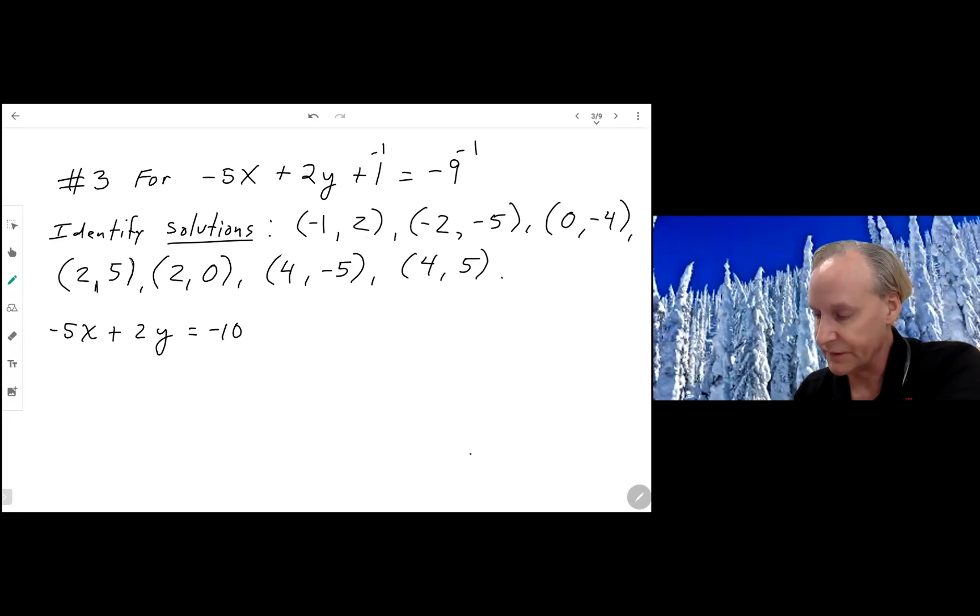So I'm going to substitute in my negative 1, 2 and see if it's true. Negative five times X plus two Y. And you know what, I think I am going to subtract the 1 from both sides so that it is in standard form. And I'm going to substitute in my first value, which is negative 5 times negative 1 plus 2 times 2. And is that equal to negative 10? Is 5 plus 4 equal to negative 10? And of course it's not. We can see immediately that positive 5 plus 4 is not negative 10. So that is not a solution.